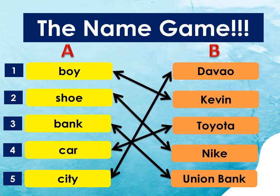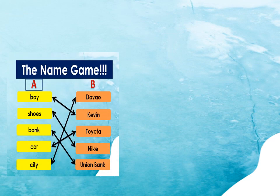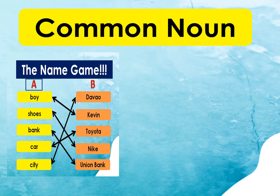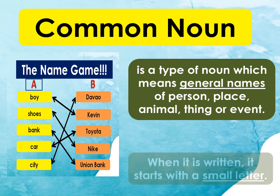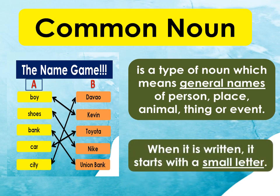Great job, kids! Now, let me ask you this question. What do we call those nouns in column A? We call them common nouns. A common noun is a type of noun which means general names of a person, place, animal, thing, or event. When it is written, it starts with a small letter.